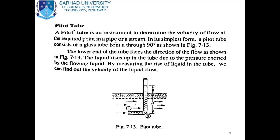A Pitot tube is an instrument to determine the velocity of flow at a required point in a pipe or stream. In its simplest form,